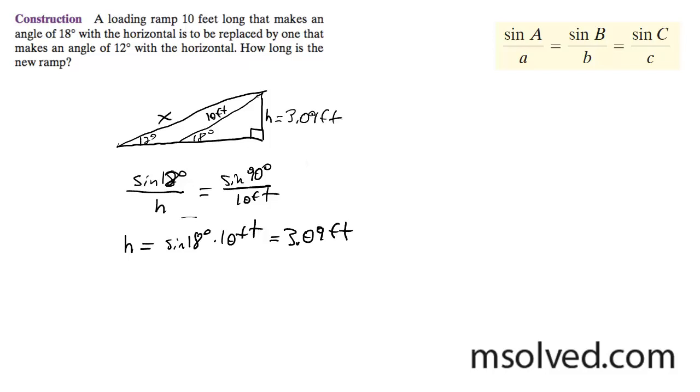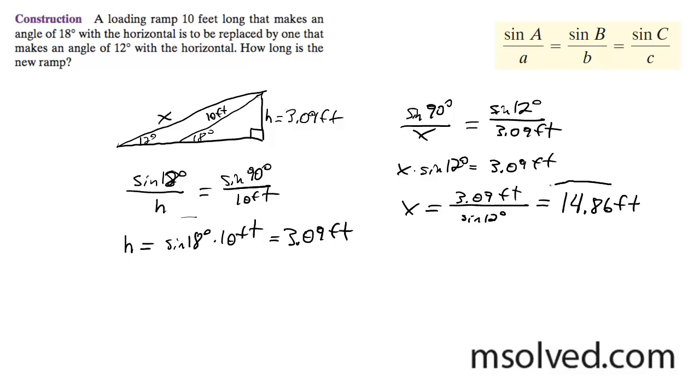So H remains constant. Now that we have that, we can do sine of 90 over X is equal to sine of 12 degrees over 3.09 feet. And cross-multiply here. So X times sine of 12 degrees is equal to sine of 90, which is just 1, times 3.09 feet. So we divide: X is equal to 3.09 feet divided by sine of 12 degrees. And this gives us—rounds to 14.86 feet. That's it. This is our solution.